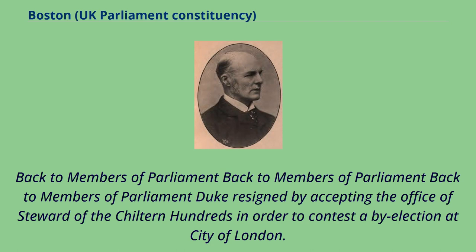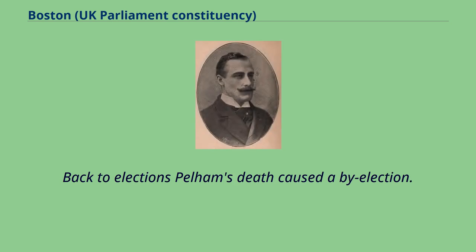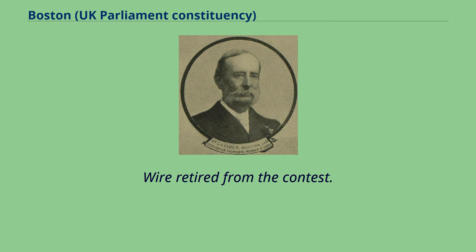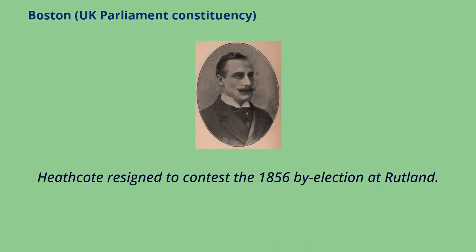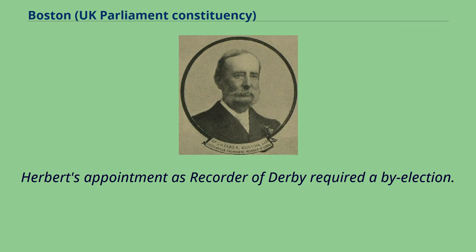One member resigned by accepting the office of Steward of the Chiltern Hundreds in order to contest a by-election at the City of London. Pelham's death caused a by-election. Heathcote resigned to contest the 1856 by-election at Rutland. Herbert's appointment as recorder of Derby required a by-election.